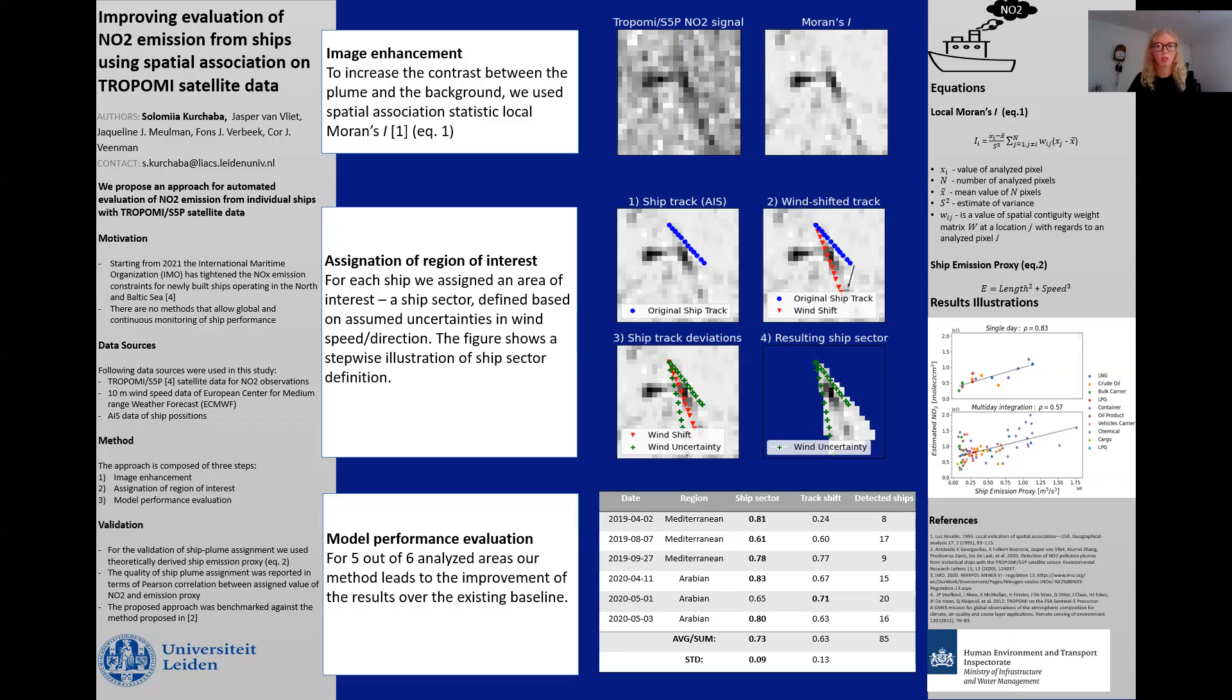The quality of the ship plume assignment is reported in terms of Pearson correlations between the estimated for each ship values of NO2 and theoretically derived emission proxy. The formula you can find on the right-hand side of the poster.